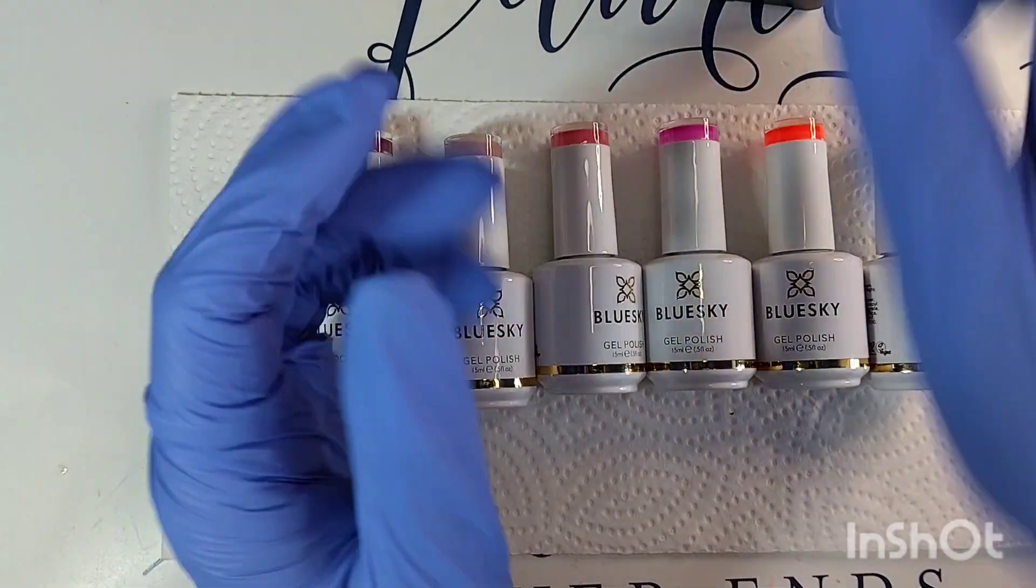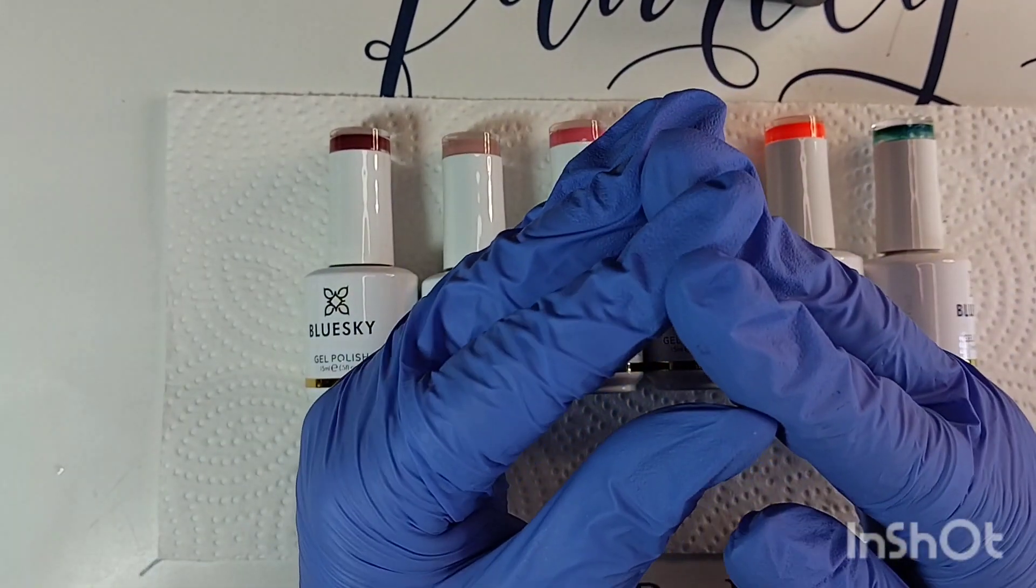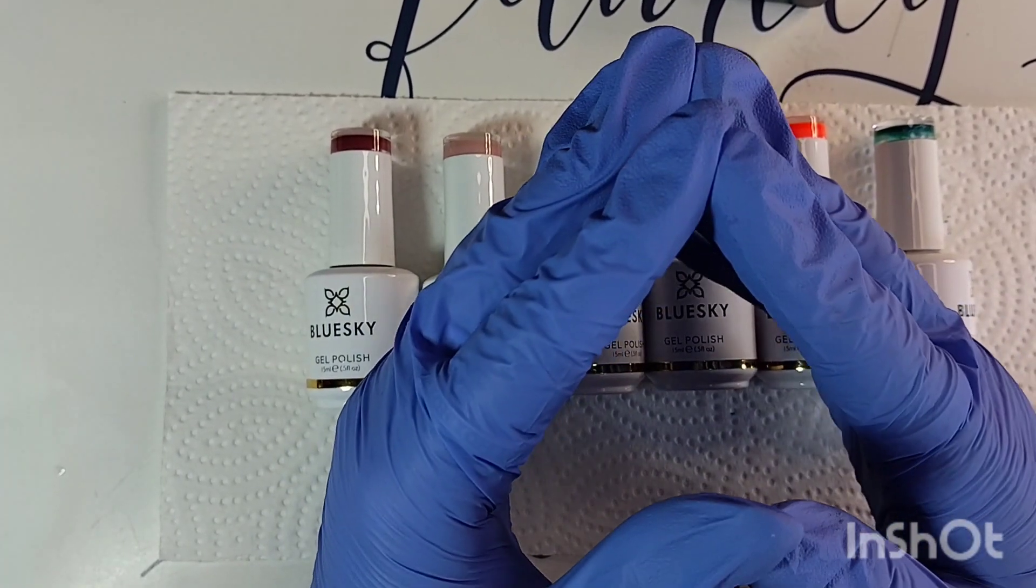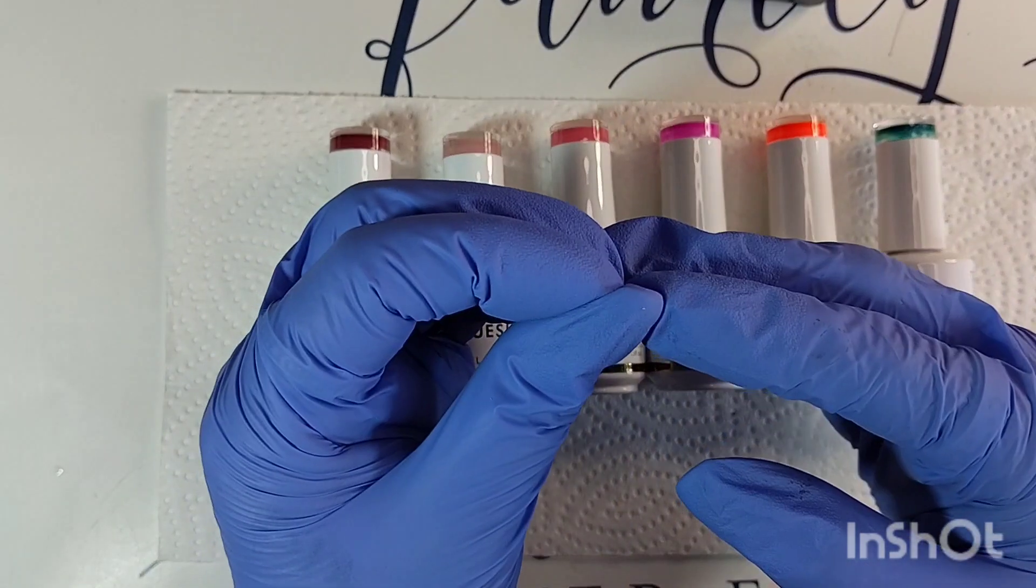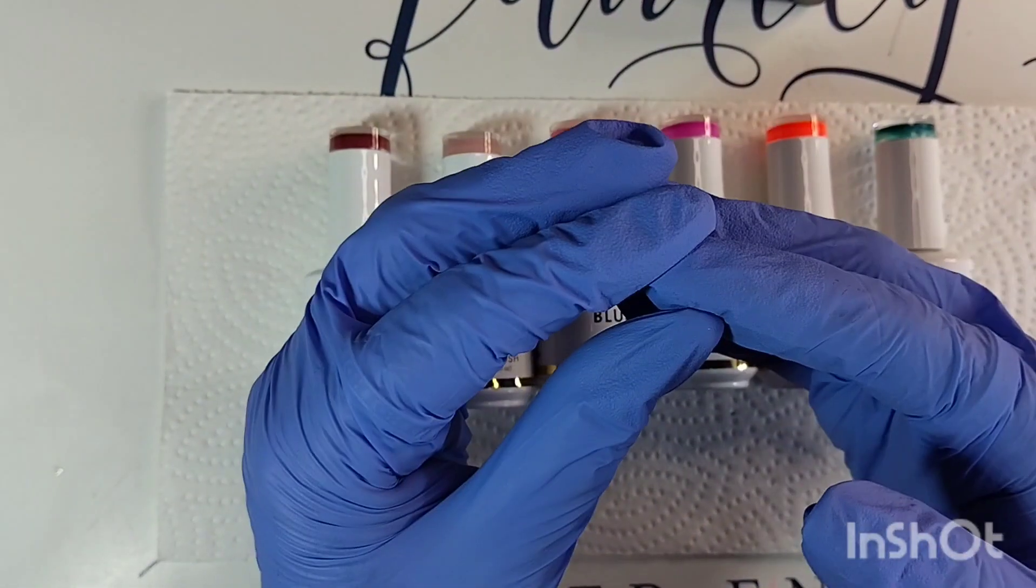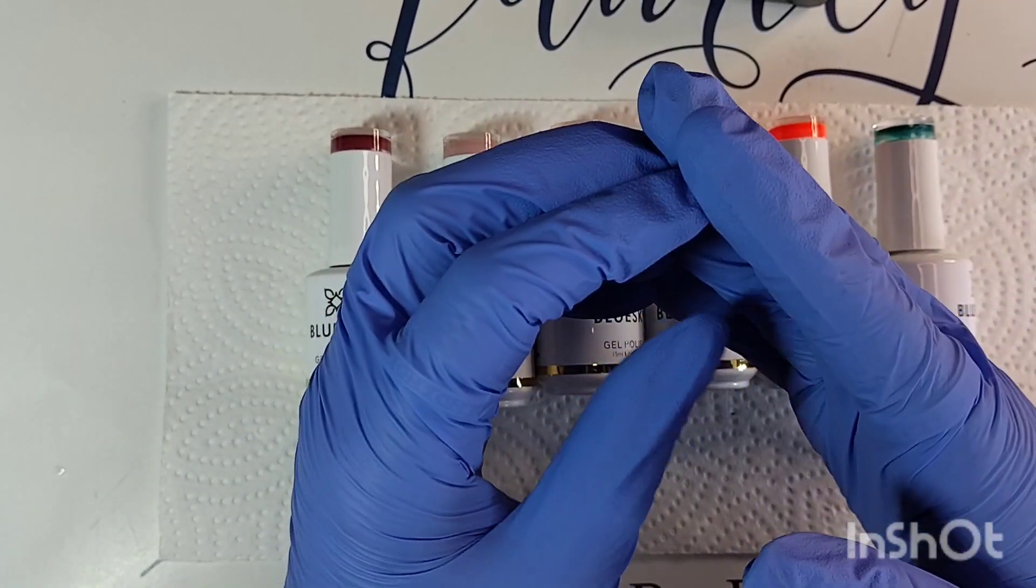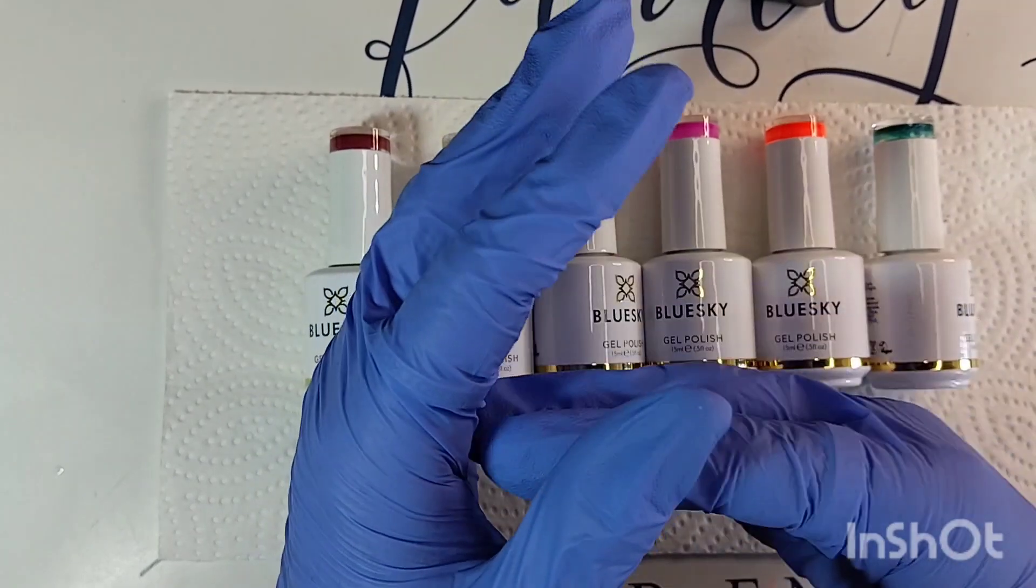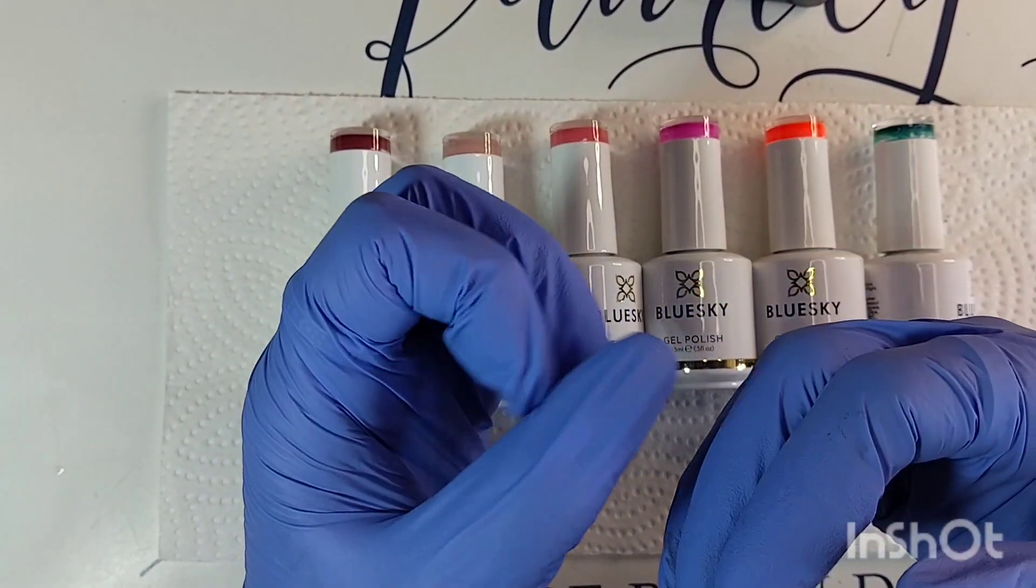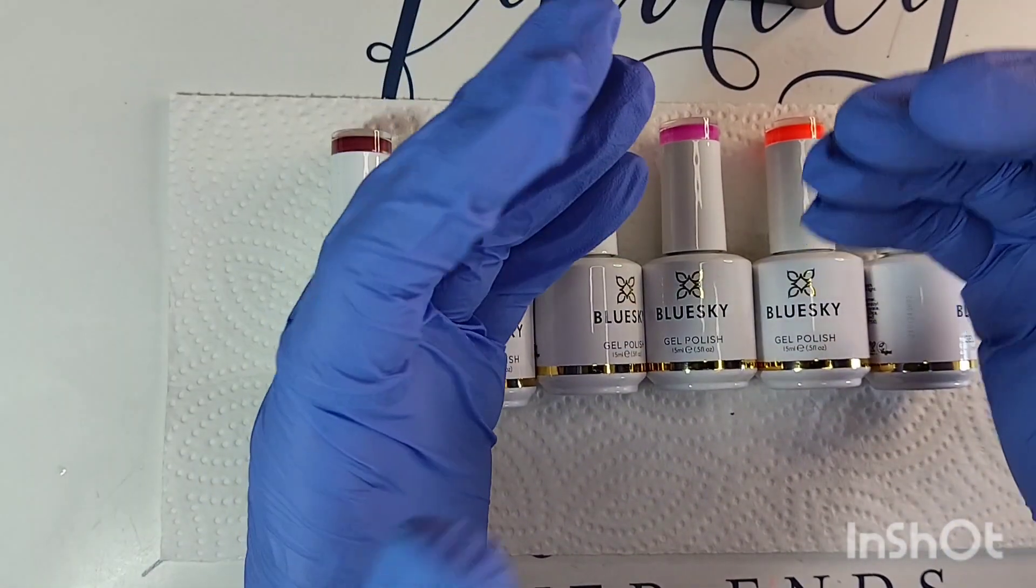Here it has all the ingredients. They are vegan, cruelty-free, and hema-free as well. Bluesky is an international beauty fashion brand which distributes their products to 67 countries around the world. They have over 1,000 distinct colors and every season they introduce two inspiring collections.